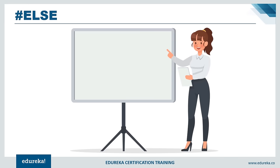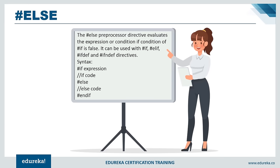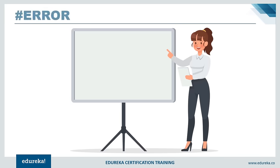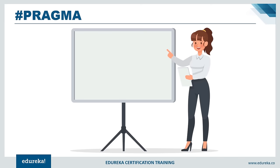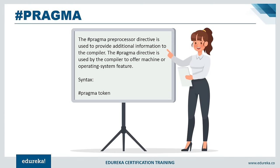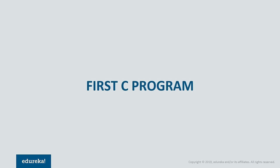#else evaluates the expression if the first if condition is false — the control enters the else part and executes its code. #error indicates any error present inside the preprocessor directive — the compiler gives a fatal error message and skips further compilation. #pragma provides additional information to the compiler about machine or operating system features — syntax: #pragma followed by the token.